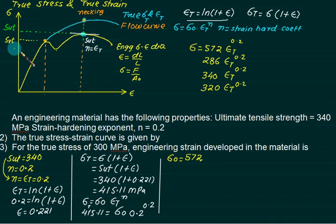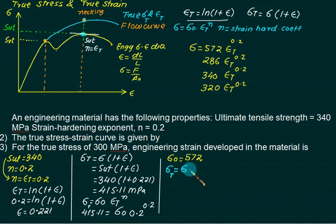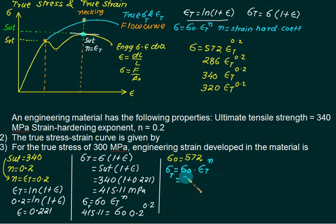The true stress equation is: σₜ = σ₀ · εₜⁿ. Solving, we find sigma-0 equals 572. This is the flow constant. The true strain is a variable quantity.